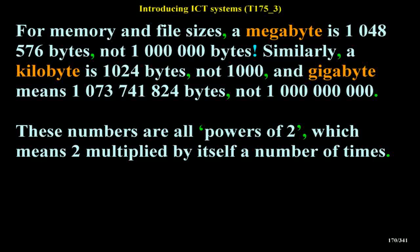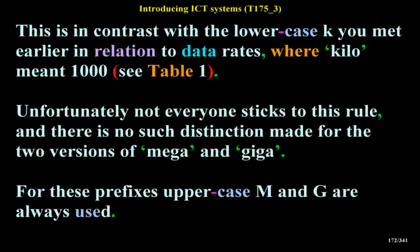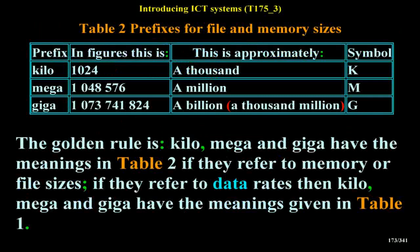These numbers are all powers of 2, which means 2 multiplied by itself a number of times. There were historical reasons why sizes were originally defined in this way. An uppercase K should be used for kilobyte when it means 1,024 — this is in contrast with the lowercase k used earlier in relation to data rates, where kilo meant 1,000. For the prefixes mega and giga, uppercase M and G are always used. Table 2 summarizes prefixes for file and memory sizes: kilo is 1,024 (approximately 1,000, symbol K); mega is 1,048,576 (approximately a million); giga is 1,073,741,824 (approximately a billion, symbol G).